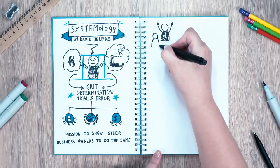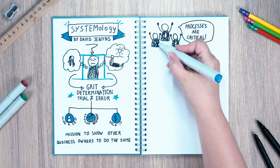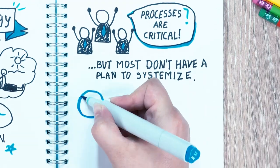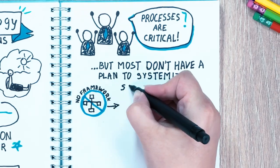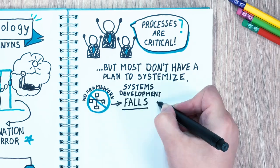Most business owners agree processes are critical for growing and scaling up a company, yet for the vast majority, they don't have a plan to systemize. Because early-stage companies get overwhelmed by creating systems when they don't have a framework or they get stuck with busy work, systems development often falls by the wayside.